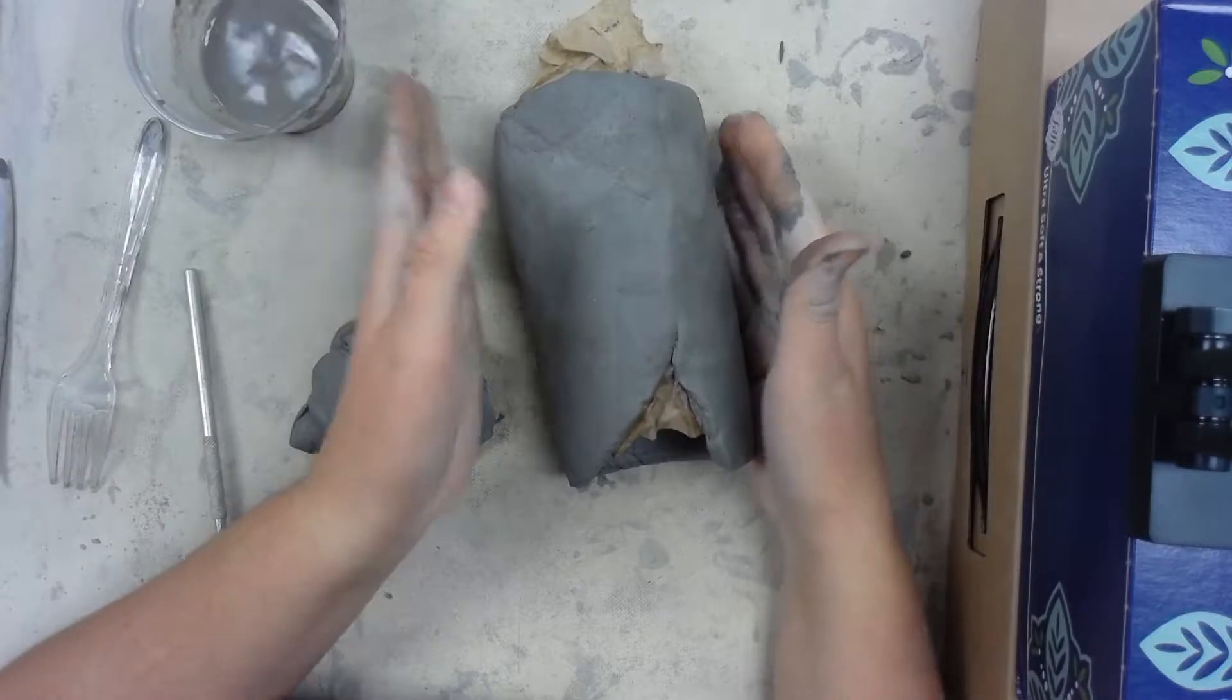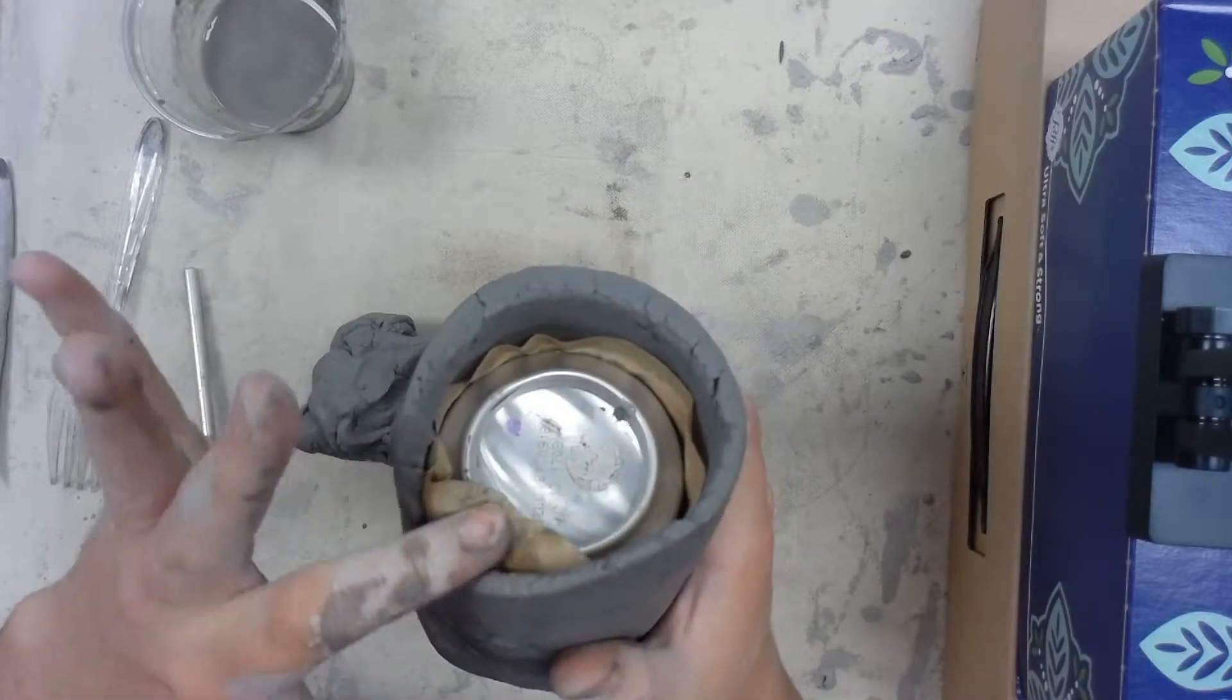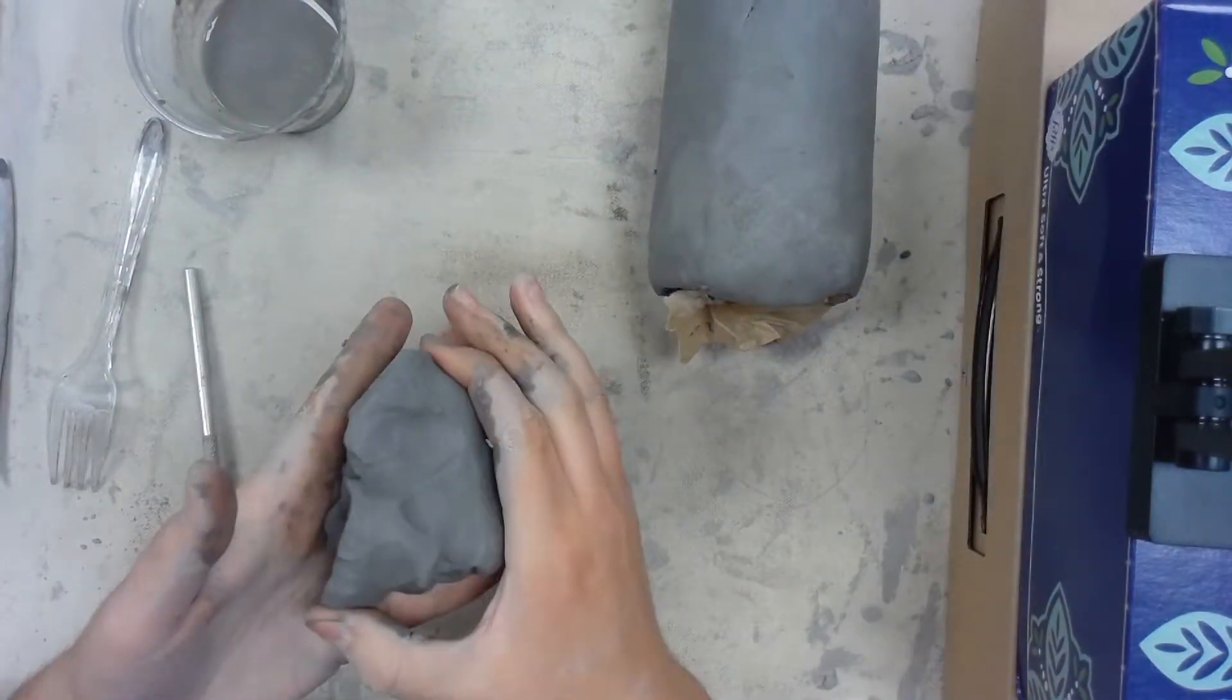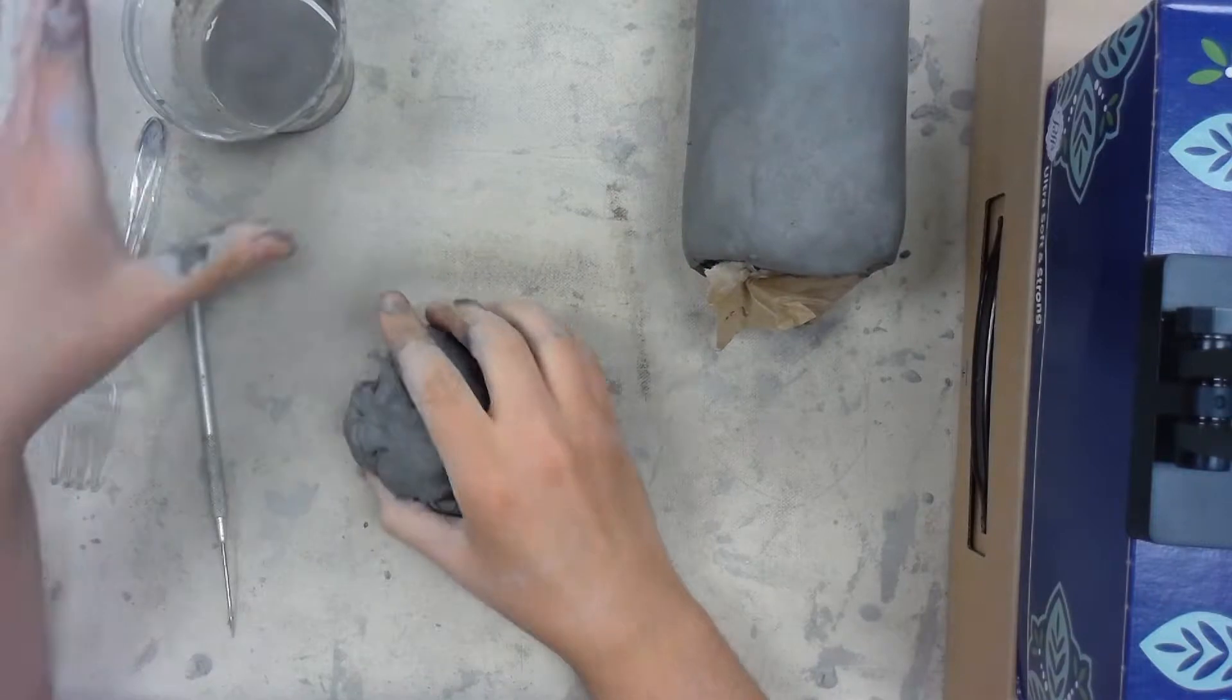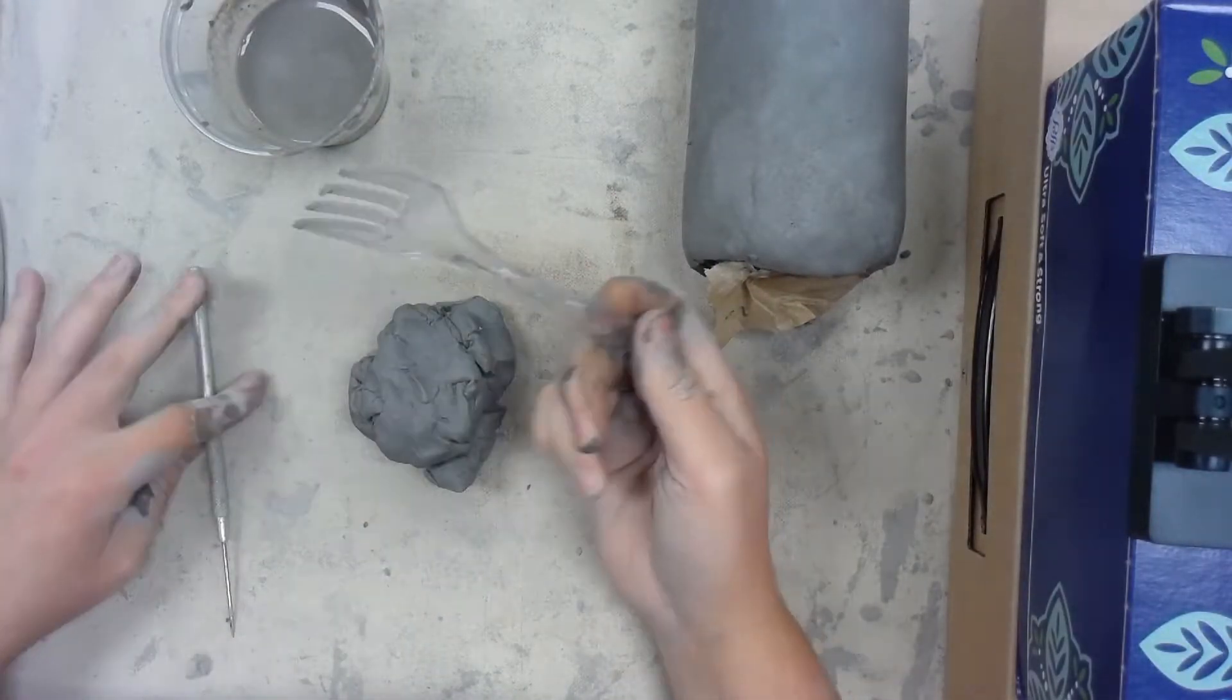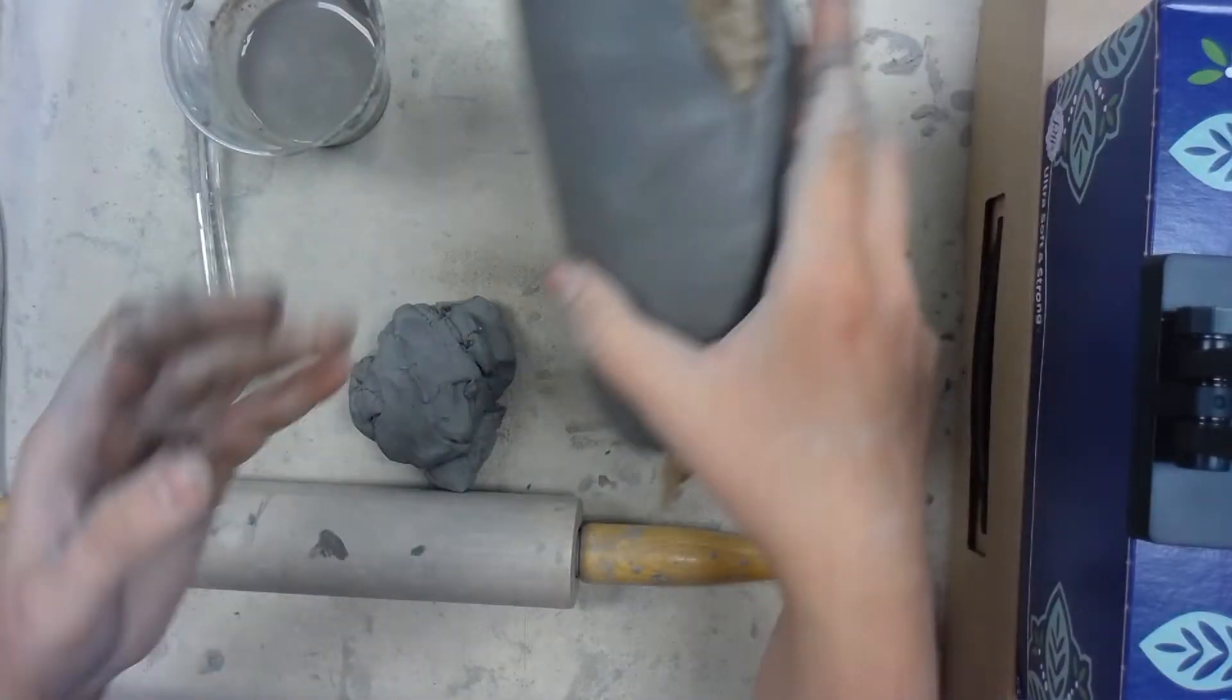What you will need is your clay tunnel that has your pop can inside of it with paper towel around it. You'll need some extra clay, hopefully you'll have some extra from this. You'll need some slip, you'll either need a fork or a needle tool, and you'll need a rolling pin.